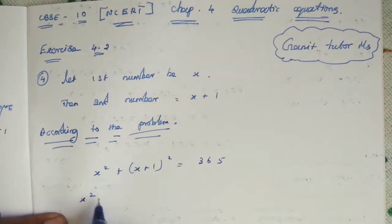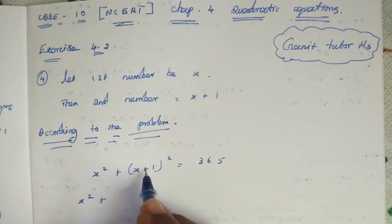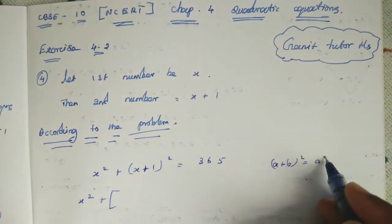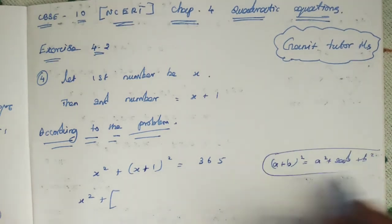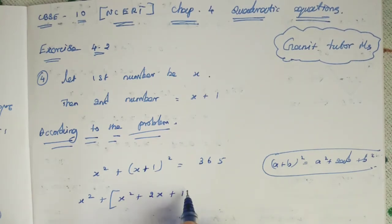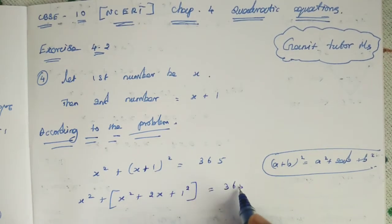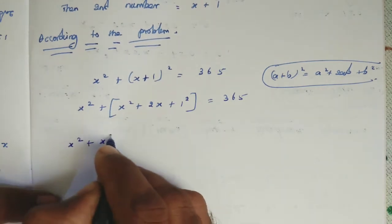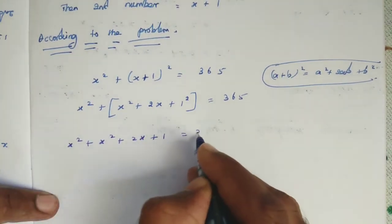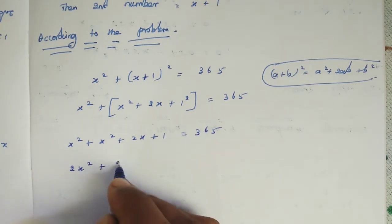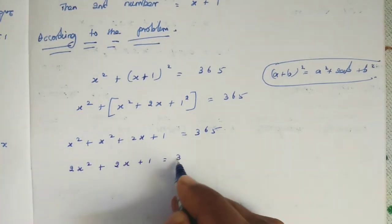Now we can simplify this. X squared plus (X+1) whole squared — we expand (X+1)² using the identity (A+B)² = A² + 2AB + B². Here A is X and B is 1, so we get: X squared plus 2 times X times 1, that is 2X, plus 1 squared, that is 1, equals 365. So: X squared plus X squared plus 2X plus 1 equals 365. Combining like terms: 2X squared plus 2X plus 1 equals 365.